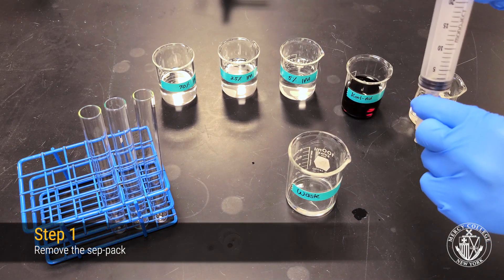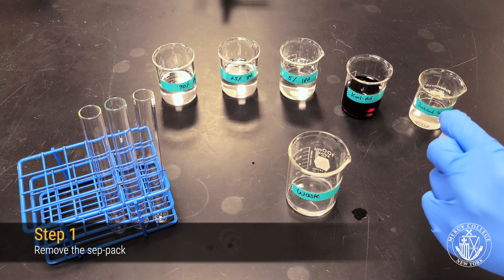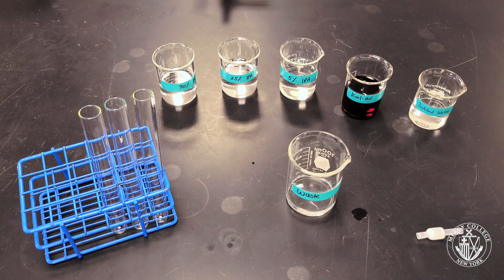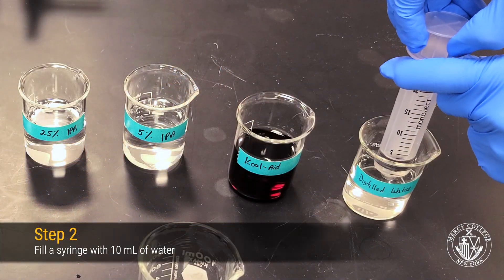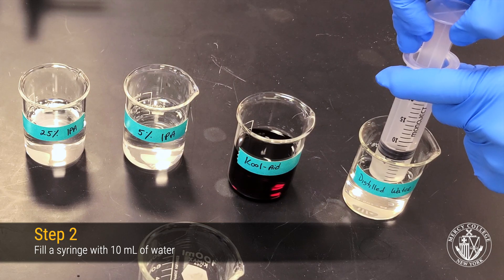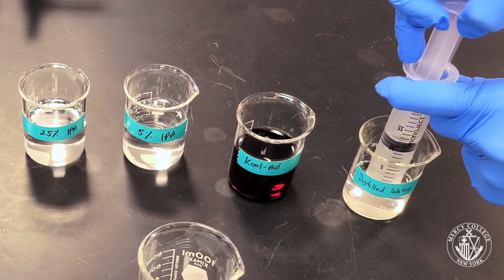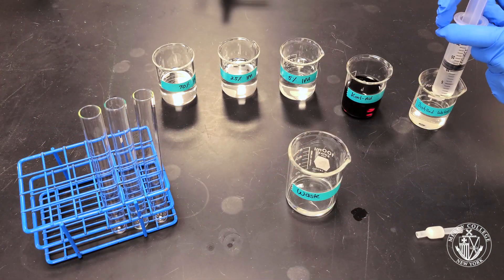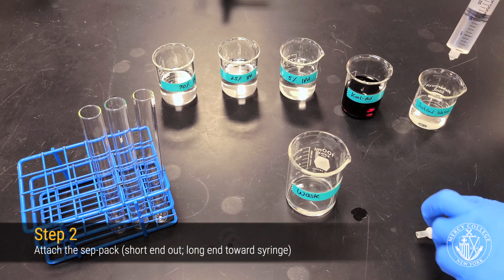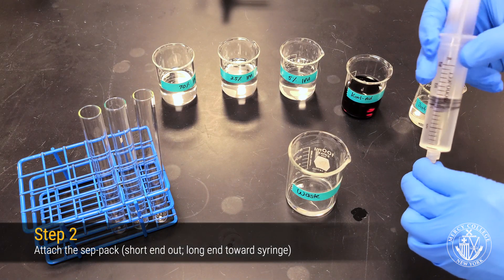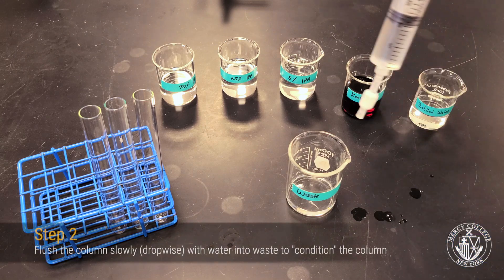Now remove the CEPPAC cartridge and refill your syringe with 10 mL of distilled water. We're going to use the water to condition our column since our Kool-Aid mixture is also dissolved in water. Now reattach the CEPPAC column to the syringe and slowly flush the syringe with the water drop by drop.